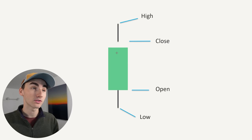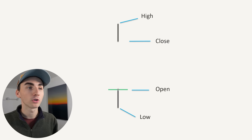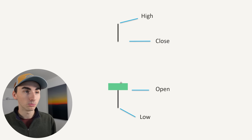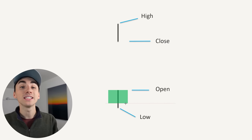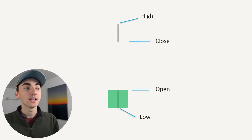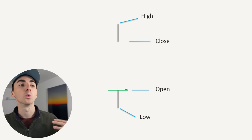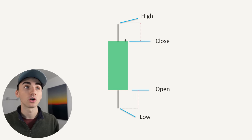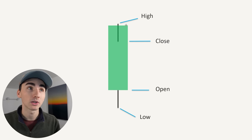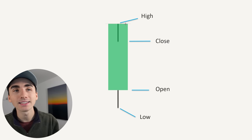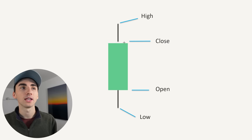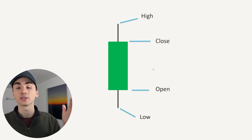How one of these forms in real time is the market will be opening here and it'll move around. You'll see the body of the candlestick moving, and then as it starts to go up, you'll see a wick start to form. The candle could have gone all the way up to the highs and then come back down and closed.